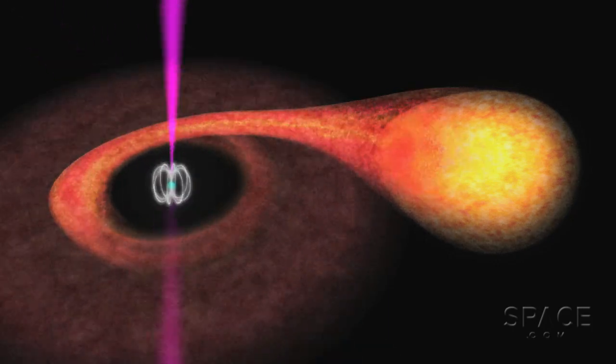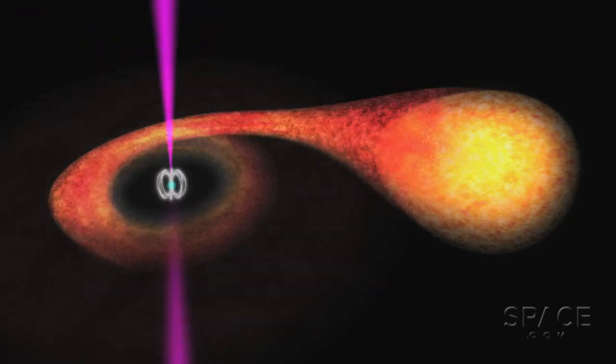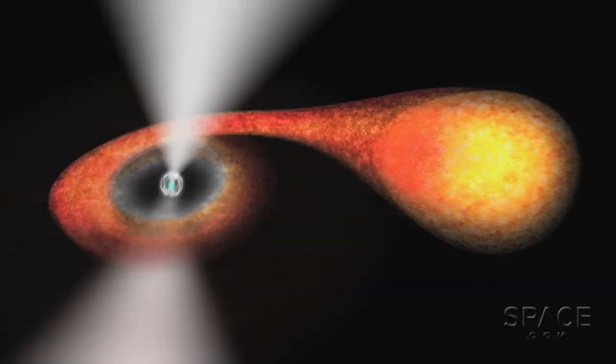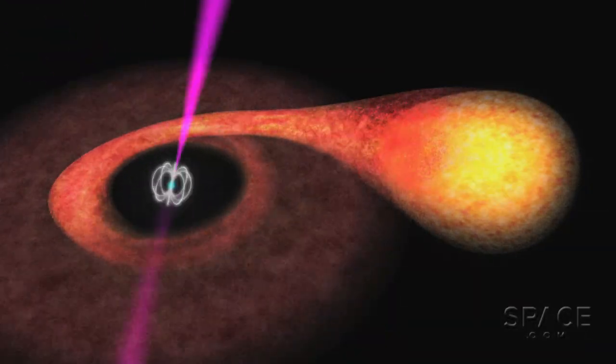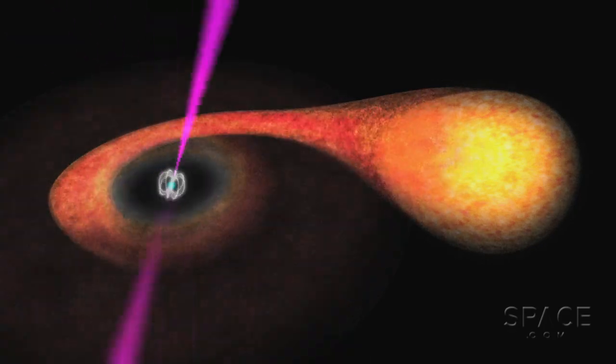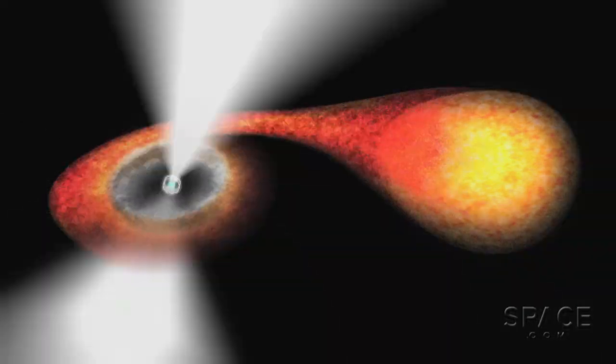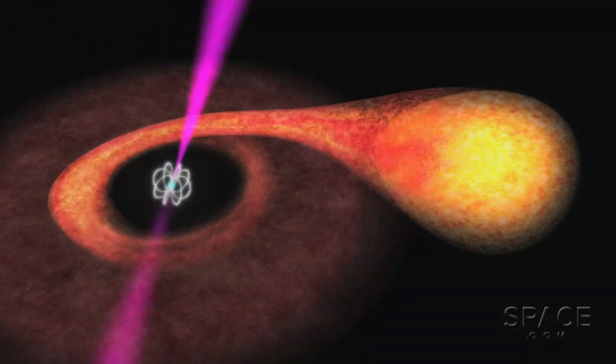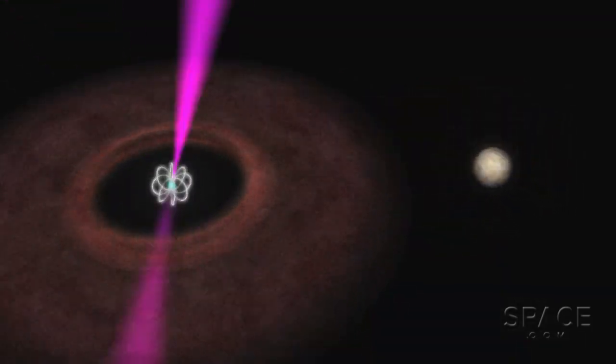Scientists call the pair a low-mass X-ray binary. And over perhaps a billion years' time, the companion's contributions will spin the pulsar up until it's whizzing around hundreds of times each second. That state is the classic millisecond pulsar of the sort astronomers have been listening to for decades. And now they're watching as one forms.